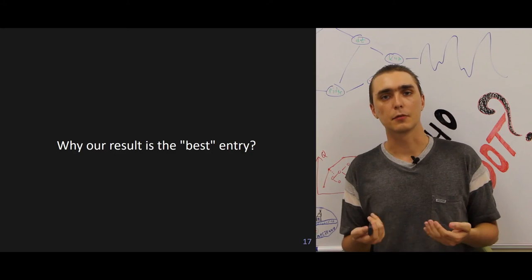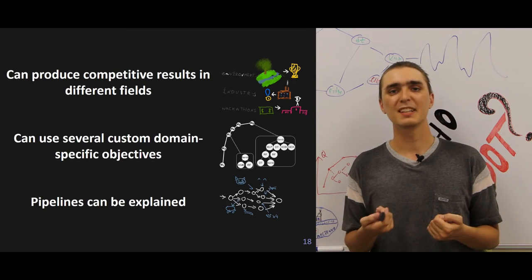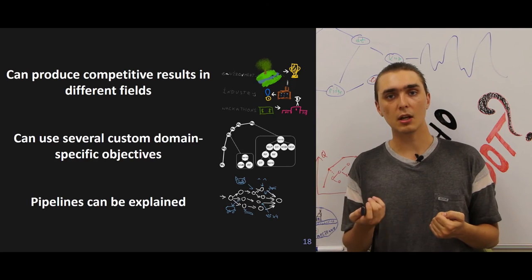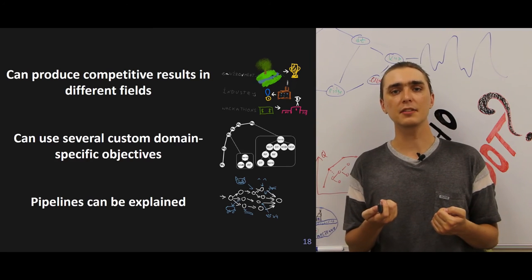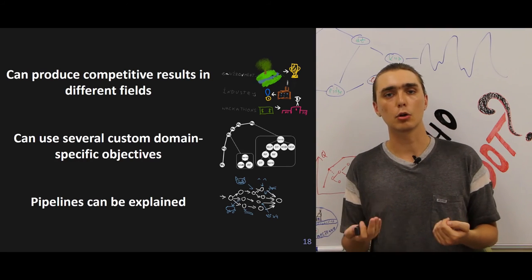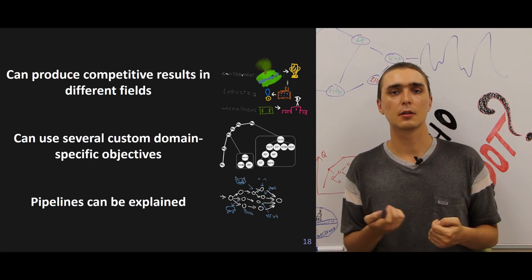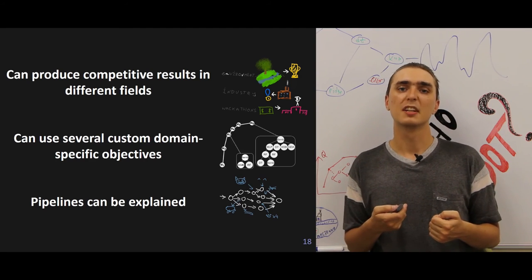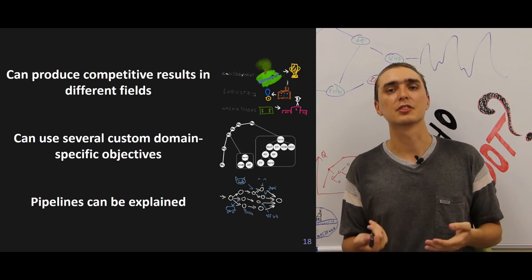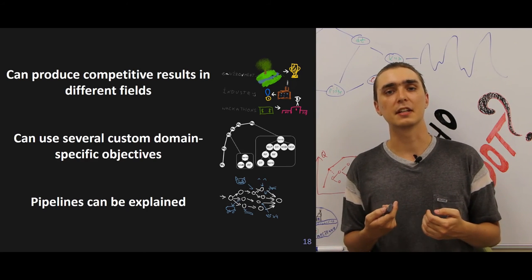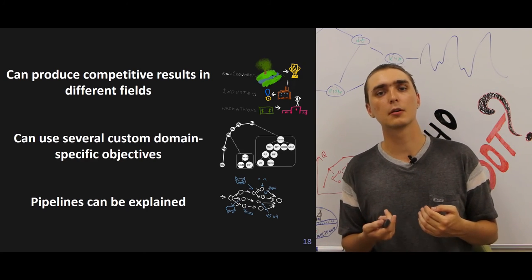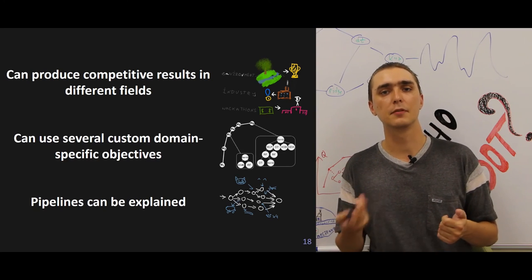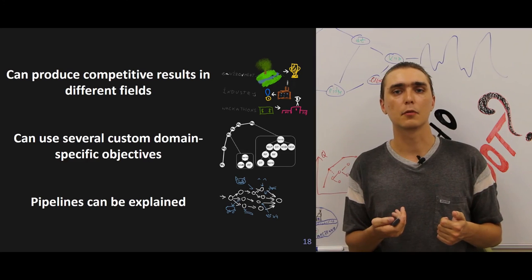Why is our result the best for this competition? First of all, it can produce human-competitive pipelines for a large variety of cases using human-like logic. To improve this feature, we also implement support for domain-specific objective functions that allow to resolve even very sophisticated tasks with human-like logic, since we use objective functions that are specific for tasks that we want to solve.